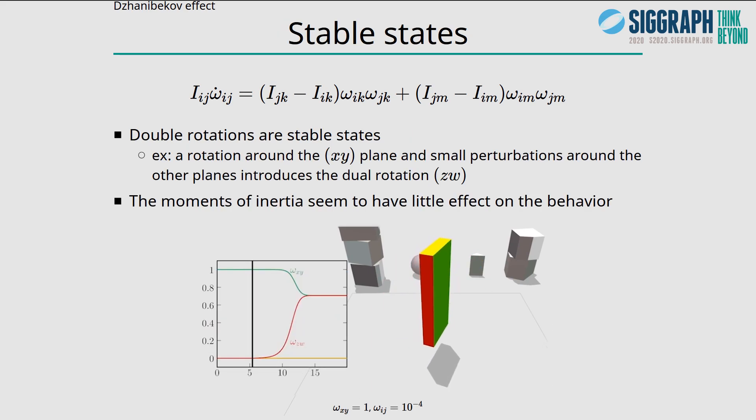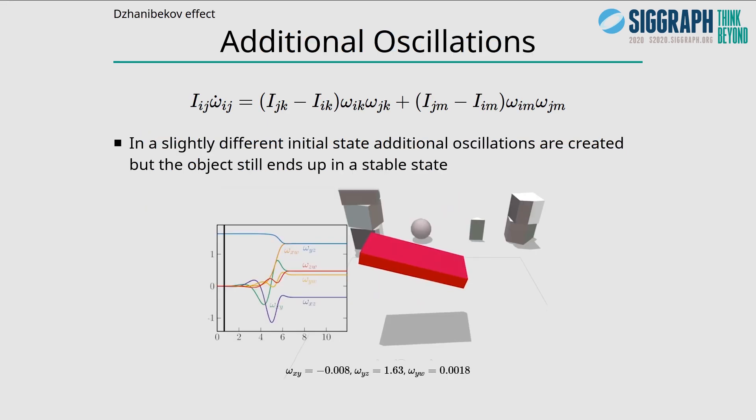Double rotations are stable states, so a small perturbation around all the other planes and large rotation in the XY plane eventually evolves into a double rotation in the plane perpendicular to the XY plane, the ZW plane. But there are other cases that can happen based on the initial state, like in this example. But in the end, the object still ends up in a stable state.